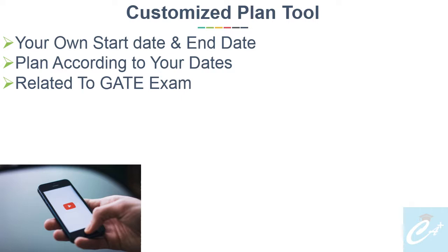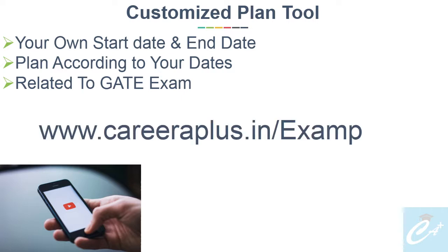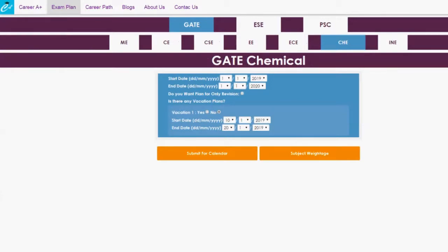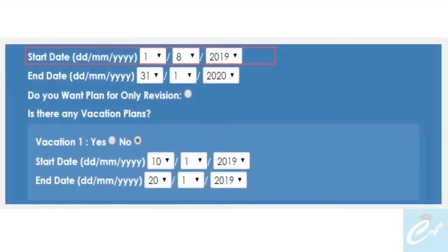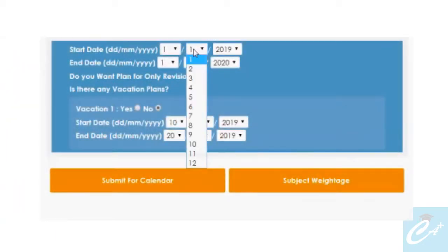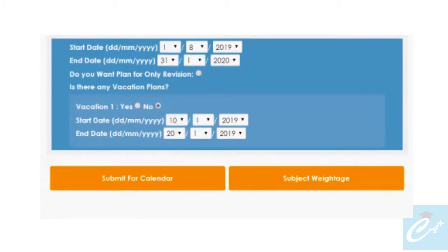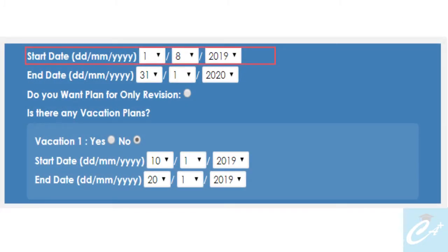To access this tool, go to our site www.careeraplus.in/examplan. By default it will be in the GATE section, or you can click the GATE button to access it. Then you can choose chemical engineering. The first option is start date — use the dropdown menu to select the start date and end date of your plan. We have used 1st August 2019 as start date and 31st January 2020 as end date. Next, there is an option for whether you want this plan for revision or not — we will see this option later, so for now you don't have to click it.